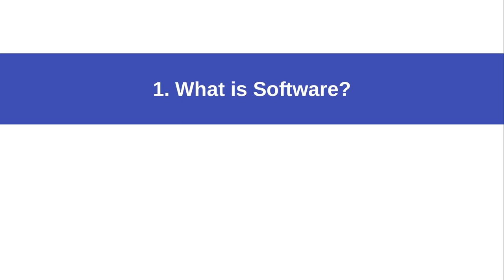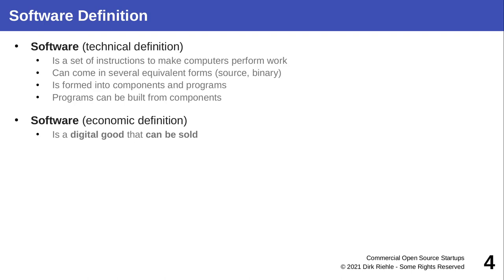To get started, let's ask: what is software? You may think about it narrowly as a set of instructions that make a computer do some work as the result of programming — some binary or even the source code. But that's really just a very technical perspective. In this course, we will take more of an economic or business perspective. So in that respect, software is a digital good that can be sold, and so because it can be sold, you can make money and so forth. It's a good.